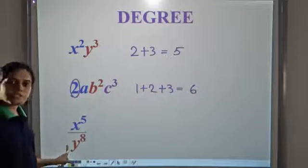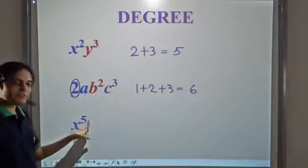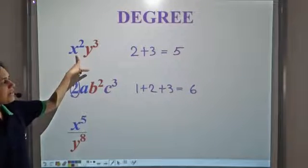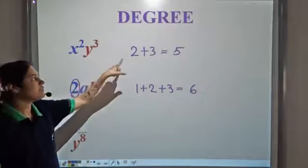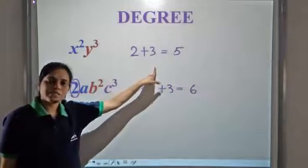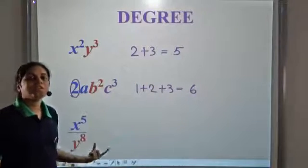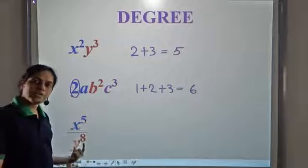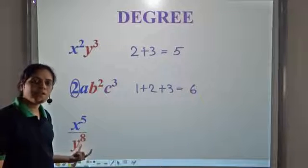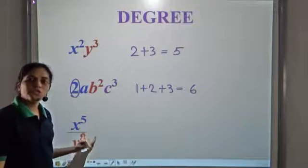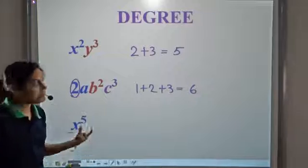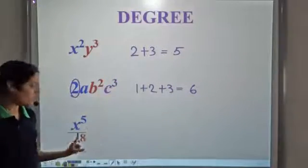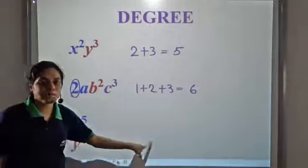What is the power of this term? x to the power 5 divided by y to the power 8. Now when we multiply variables, we add their powers. Division is the inverse of multiplication. So when we divide a variable by another variable, what should we do? We should subtract their powers. Because for multiplication we add, for division we should subtract.